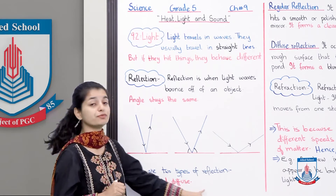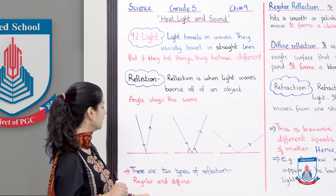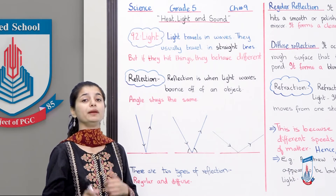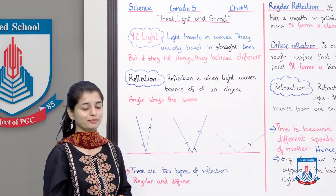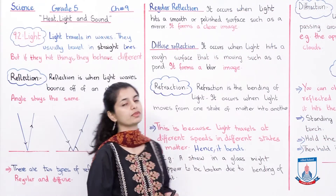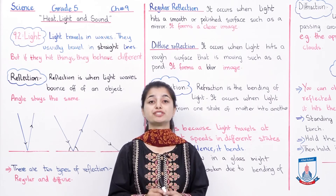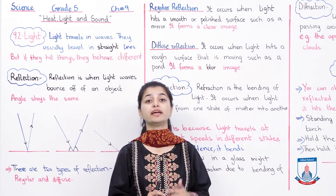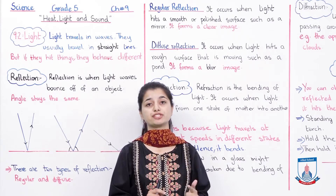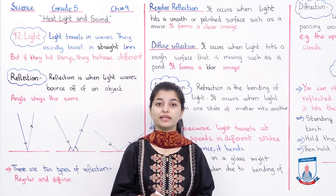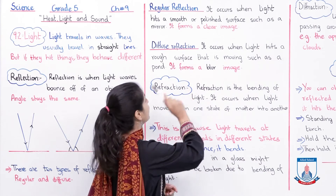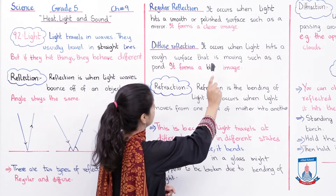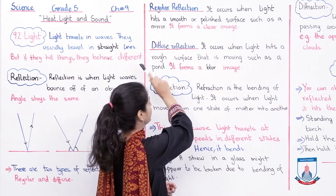There are two types of reflection: regular and diffuse. Now we will discuss both types. Regular reflection occurs when light hits a smooth or polished surface such as a mirror — it forms a clear image.